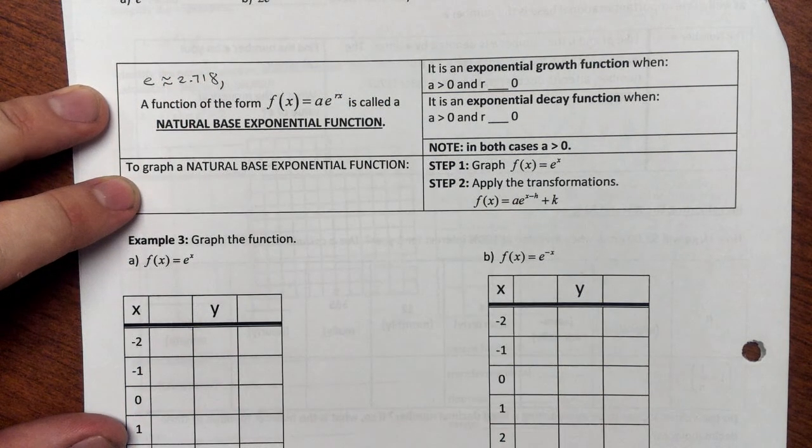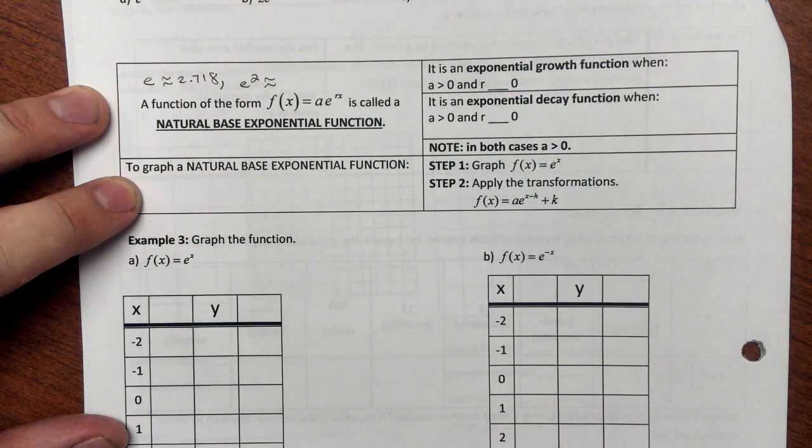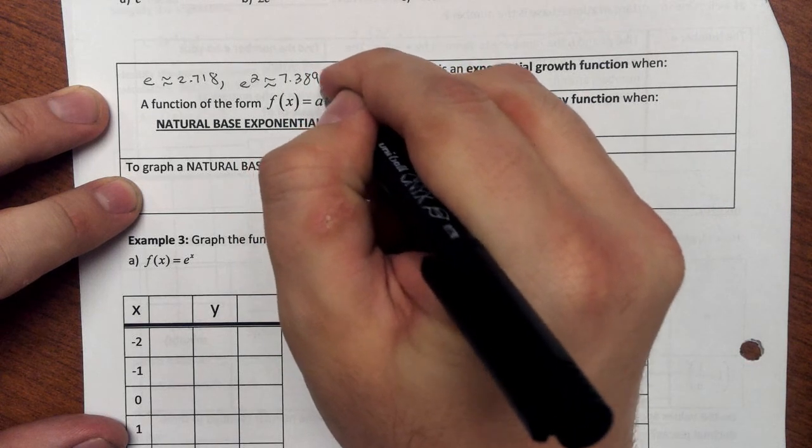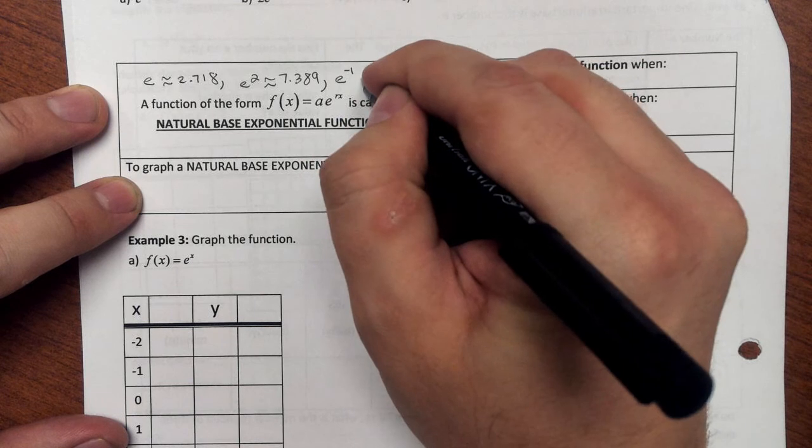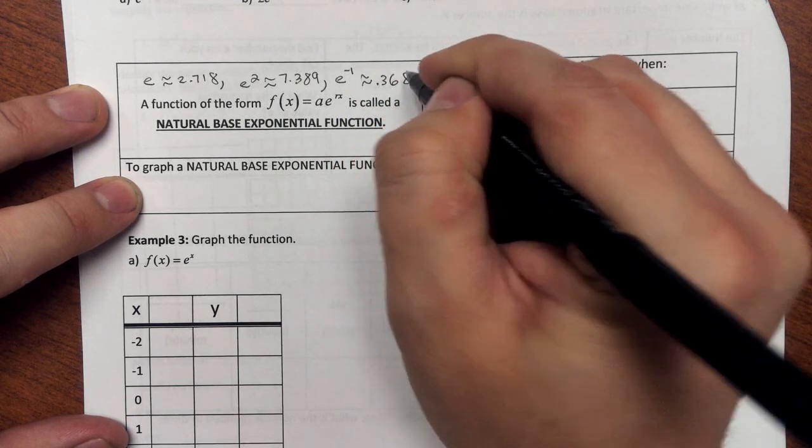And if we're graphing, we're also going to need to know that e squared is approximately 7.389, and it will also be helpful to know what e to the negative first, the reciprocal of e is, and that's about 0.368.